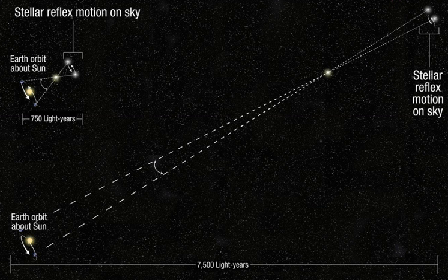To measure large distances, such as the distance of a planet or a star from Earth, astronomers use the principle of parallax. Here, the term parallax is the semi-angle of inclination between two sight lines to the star, as observed when Earth is on opposite sides of the Sun in its orbit. These distances form the lowest rung of what is called the cosmic distance ladder, the first in a succession of methods by which astronomers determine the distances to celestial objects, serving as a basis for other distance measurements in astronomy forming the higher rungs of the ladder.